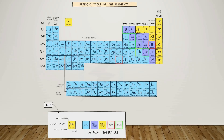Here we have the periodic table, and everything matches the statements we made in the previous slide. You go from hydrogen, then helium — the proton number is increasing. Hydrogen has one proton, helium has two protons, lithium has three, beryllium has four, boron has five, and so it goes on.